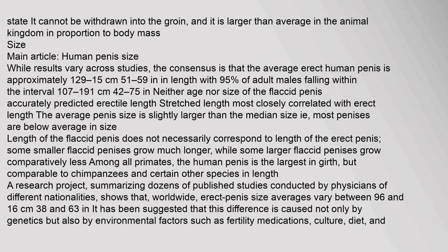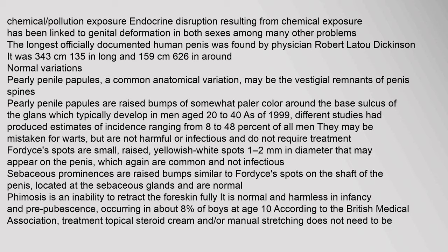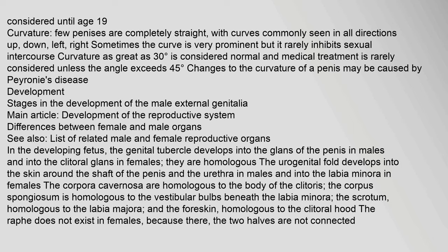It cannot be withdrawn into the groin, and it is larger than average in the animal kingdom in proportion to body mass. While results vary across studies, the consensus is that the average erect human penis is approximately 12.9 to 15 cm. Chemical pollution exposure and endocrine disruption resulting from chemical exposure has been linked to genital deformation in both sexes. Curvature: few penises are completely straight, with curves commonly seen in all directions. Curvature as great as 30 degrees is considered normal and medical treatment is rarely considered unless the angle exceeds 45 degrees.